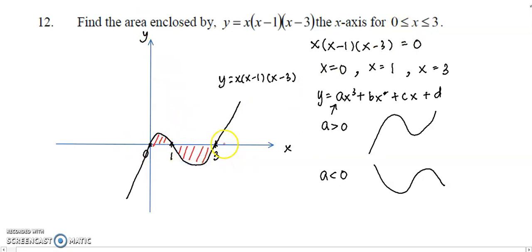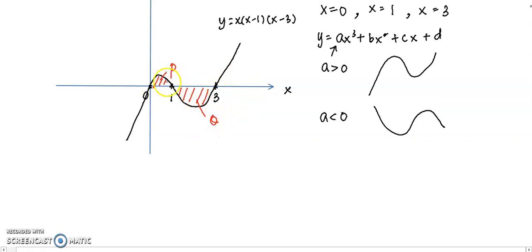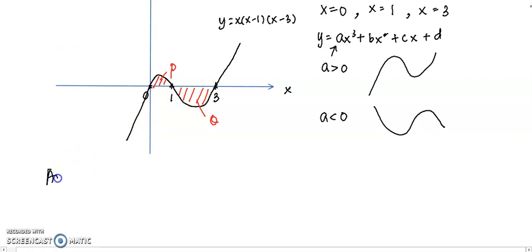From the diagram, we can clearly see that one region is above the x-axis — I label it P — and the region below the x-axis I label Q. So we have two different regions: one above and one below the x-axis. We need to separate them, find each area individually, then combine them.